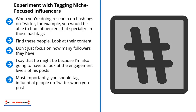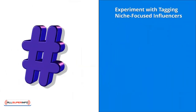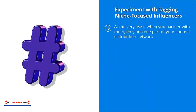Most importantly, you should tag influential people on Twitter when you post. Use your most powerful hashtags and mention them in your post. This can help you get on their radar — they'll be put on notice that you are also sharing similar content. If they check out your stuff and like what they see, don't be surprised if they share your content with their following. Engage with them, let them know about your questions or suggestions.